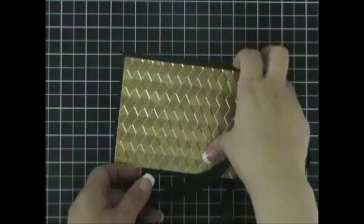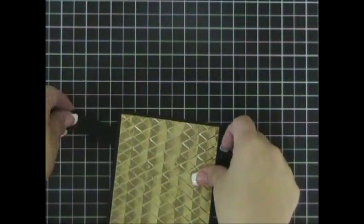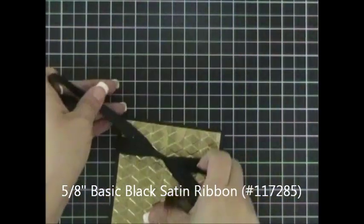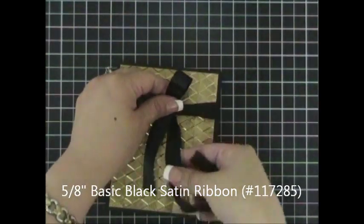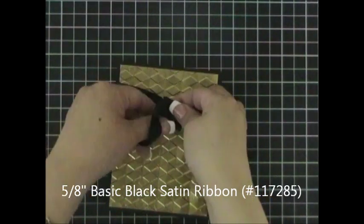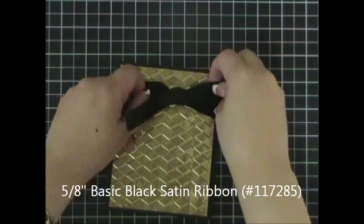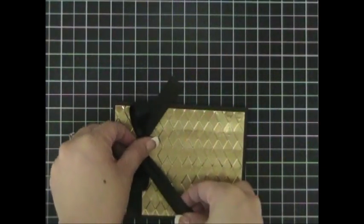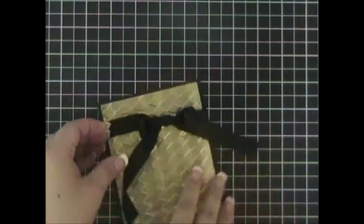The first thing I recommend is that you take a 24 inch piece of black satin ribbon and that you tie it in a bow on your card front. There we go.